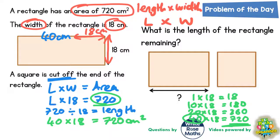And it's asking us what is the length of the rectangle remaining? Well if the whole length of the rectangle was 40, we are losing an 18 off that.